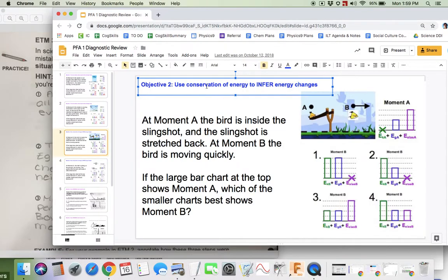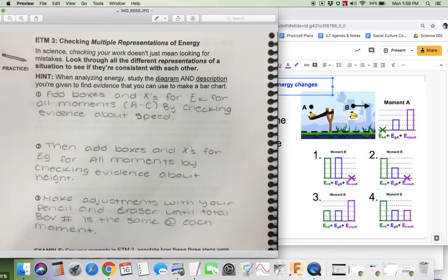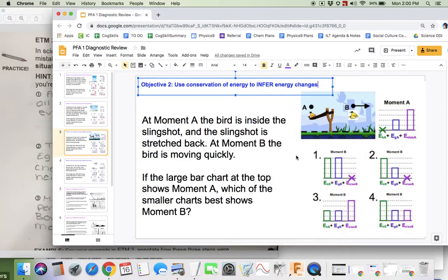Conservation of energy is the idea that the total amount of energy in a system, if energy doesn't enter or leave the system, the total energy stays the same. So that's where this Step 3 is coming from. You make adjustments until the total box number is the same at each moment. So let's use that idea to try to solve a problem.